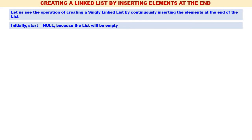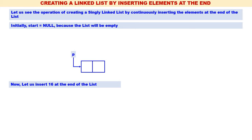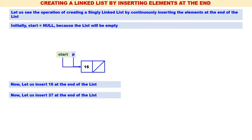Initially start will be equal to null because the list will be empty. Now let us insert 16 at the end of the list. Right now start is equal to null, therefore the list is empty, so 16 will be the first element to be inserted. Create a new node pointed by p. p->info is equal to 16, p->next is equal to null, start is equal to p. We have inserted 16 at the end.